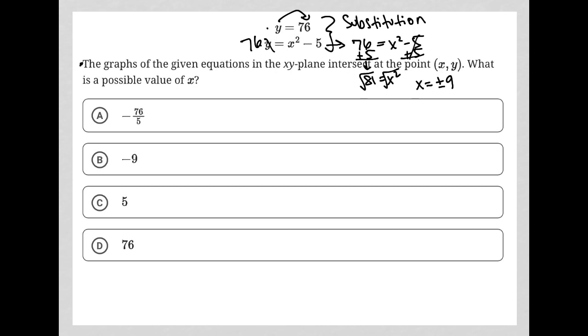So the question is that the graphs of the given equations in the xy plane intersect at the point x comma y. What is a possible value of x?